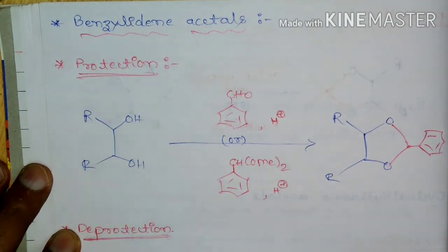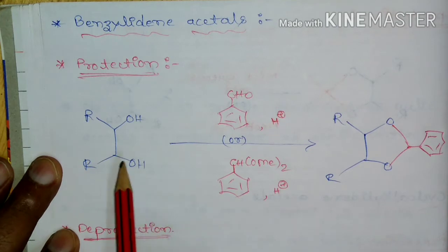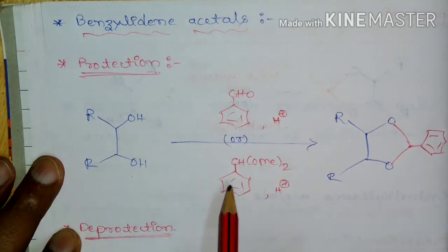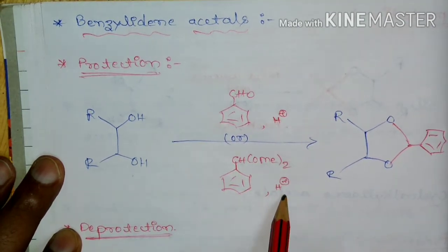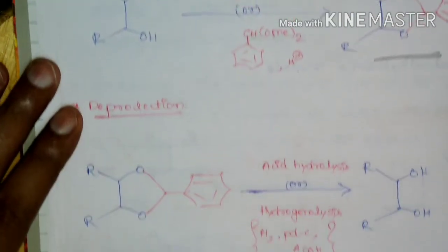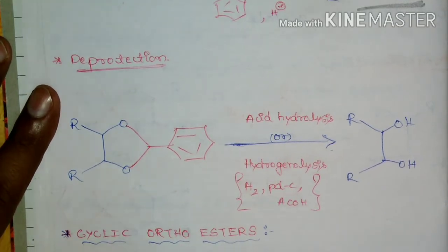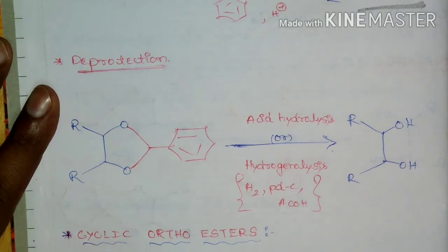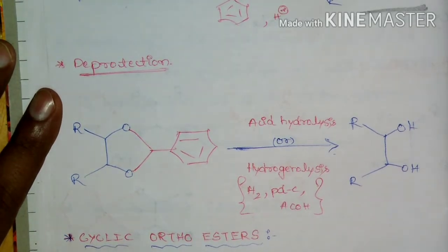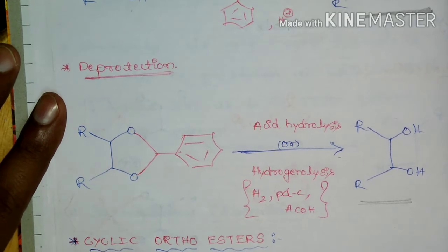Next, 1,2-diols can be protected as benzylidene acetals. Treatment of 1,2-diol with benzaldehyde in the presence of acid, or a methoxy derivative of benzaldehyde in the presence of acid, leads to benzylidene acetals. These can be deprotected by treatment with acid, or through hydrogenolysis using hydrogen and palladium on carbon in the presence of acetic acid, to give free 1,2-diols.